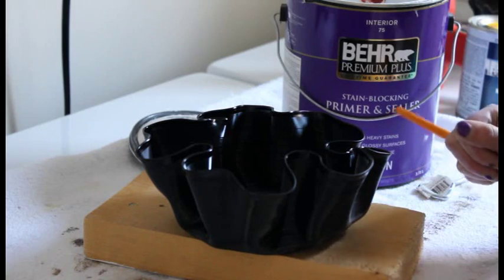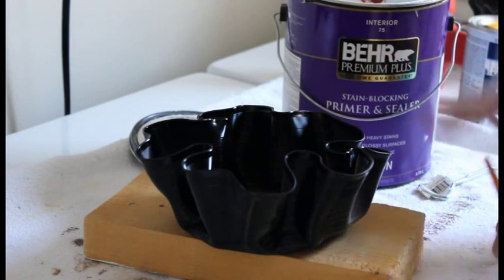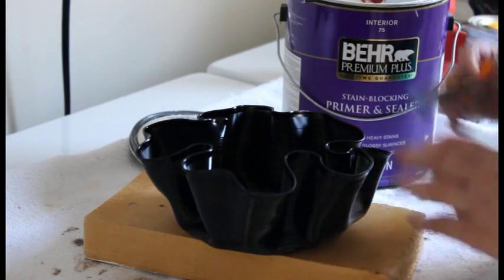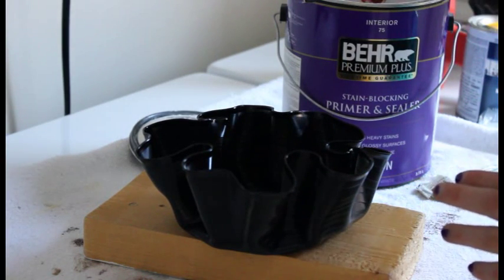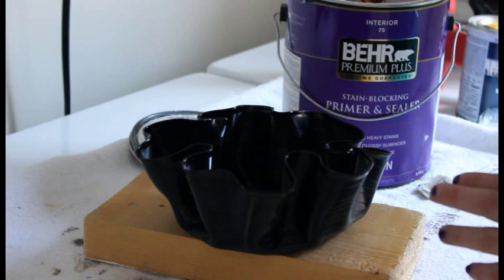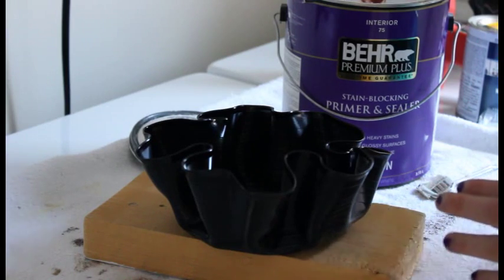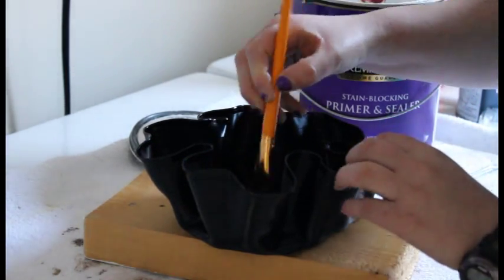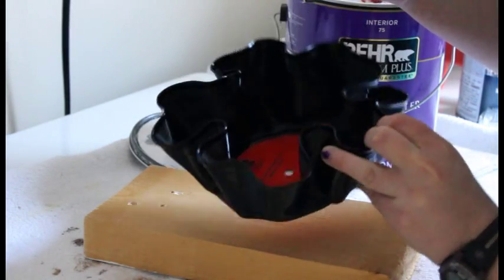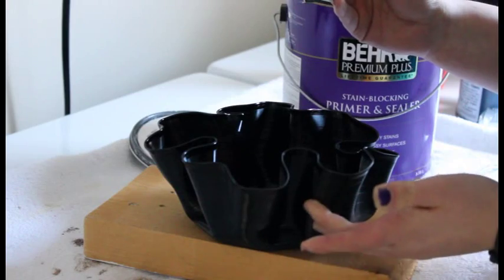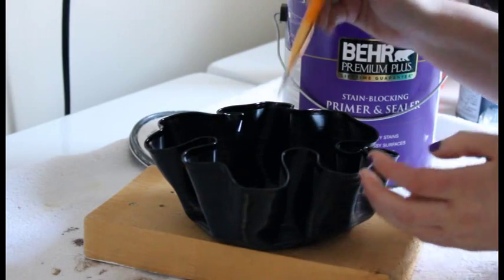This is just what I have left over so I'm just trying to use up everything that I have and I'm going to go ahead and put one coat on and then let it dry for about an hour and then I'm going to go ahead and then put my actual color on. And I'm just going to paint just the inside only. I am not going to paint the outside so I just want to prime just the inside.